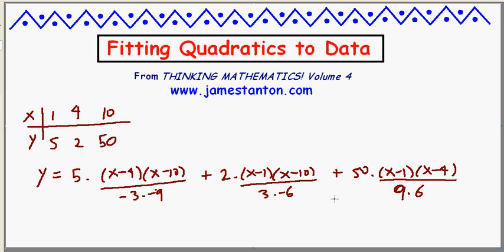I claim 5 times (x-4)(x-10) over (-3)(-9) plus 2 times (x-1)(x-10) over (3)(-6) plus 50 times (x-1)(x-4) over (9)(6) does the trick. I admit that looks frightening and ghastly. Before I analyze it, do you at least admit it's a quadratic? If I were to expand this out, it would be something with x squareds plus something with an x term plus a constant term.